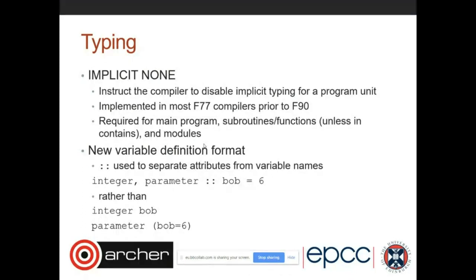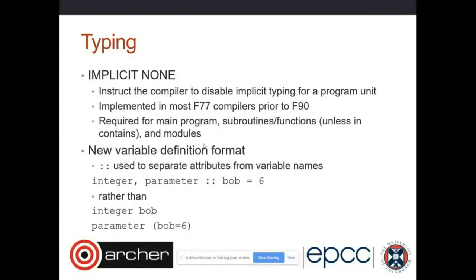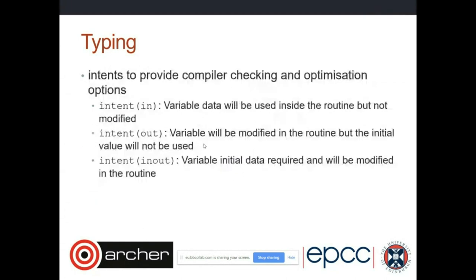Fortran 90 also introduced the double colon syntax, allowing you to define and specify attributes for variables in a single declaration. For example, you can write `integer, parameter :: my_const` rather than separating the type declaration and the parameter attribute into separate statements.